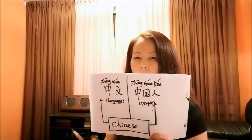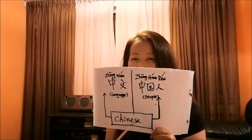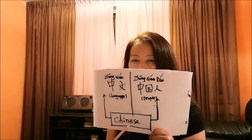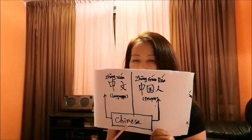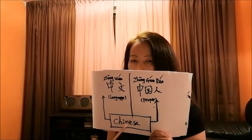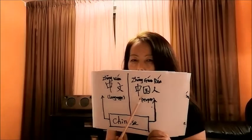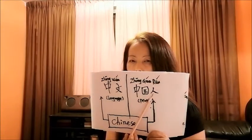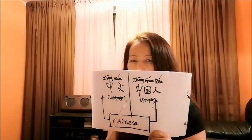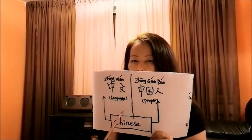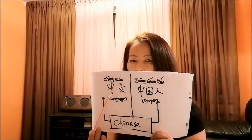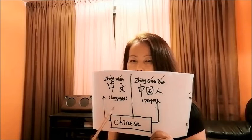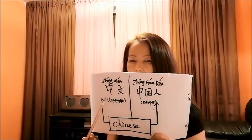Okay, let's begin with the word 'Chinese'. Here you go — the word Chinese. There are two meanings for this word. One is people: 中国人, as in 'I am Chinese.' Another meaning is language: 中文, as in 'I learned Chinese.'